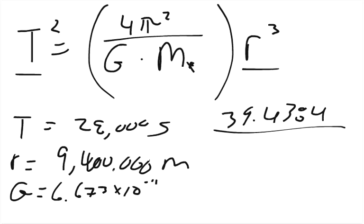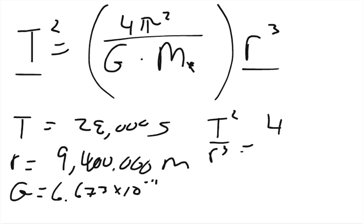So we take that divided by, so actually let's not even plug in numbers yet, let's just solve for mass. So if I take my r to the other side, I get that t squared over r cubed equals 4 pi squared over gmx.